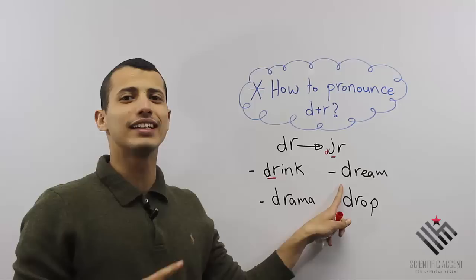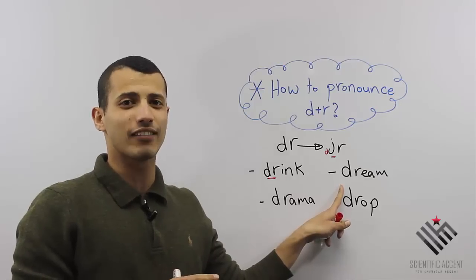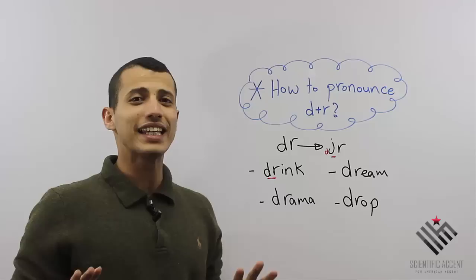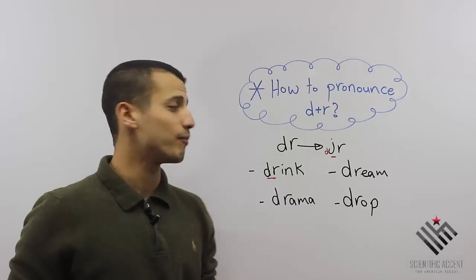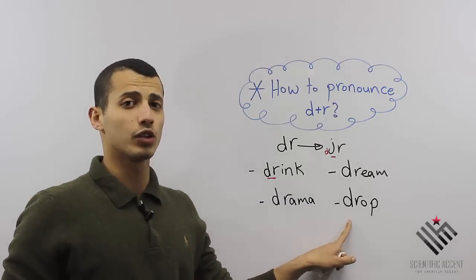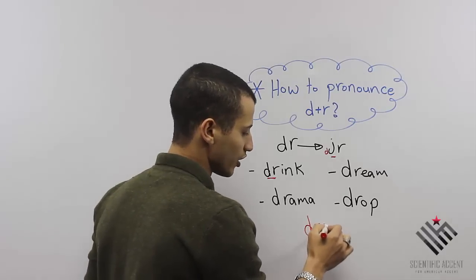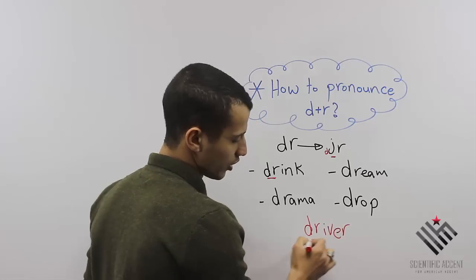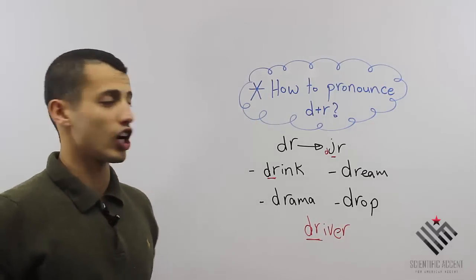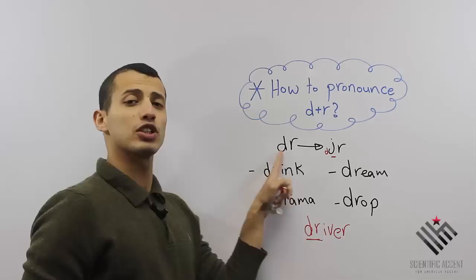A 'dream', not 'dream' - a very common mistake that a lot of my students make. Not 'dream' but 'dream'. 'Drop'. Another example: 'driver'. D plus R is 'juror'.